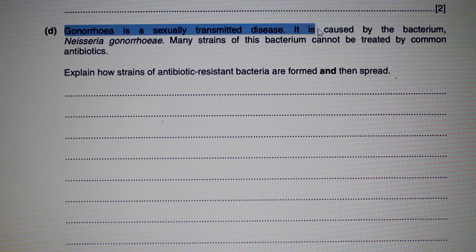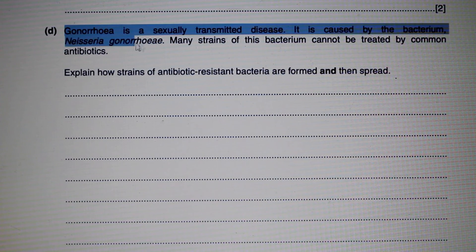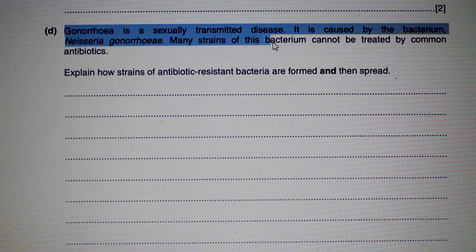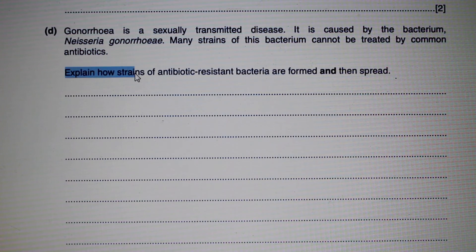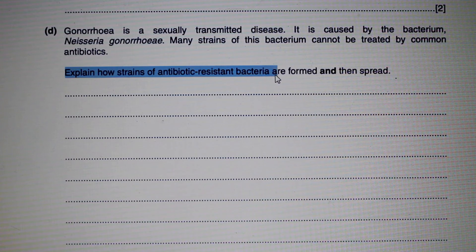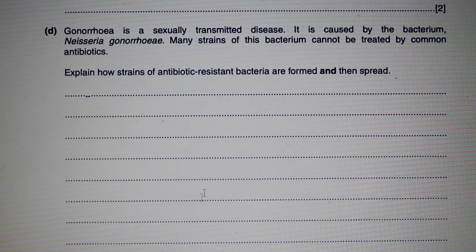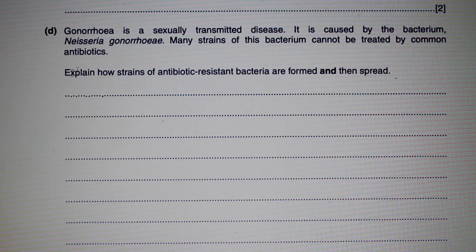Part D: Gonorrhea is a sexually transmitted disease caused by the bacterium Neisseria gonorrhoeae. Many strains of this bacterium cannot be treated by common antibiotics. The question asks us to explain how strains of antibiotic-resistant bacteria are formed and then spread. Antibiotic-resistant bacteria form through mutations.